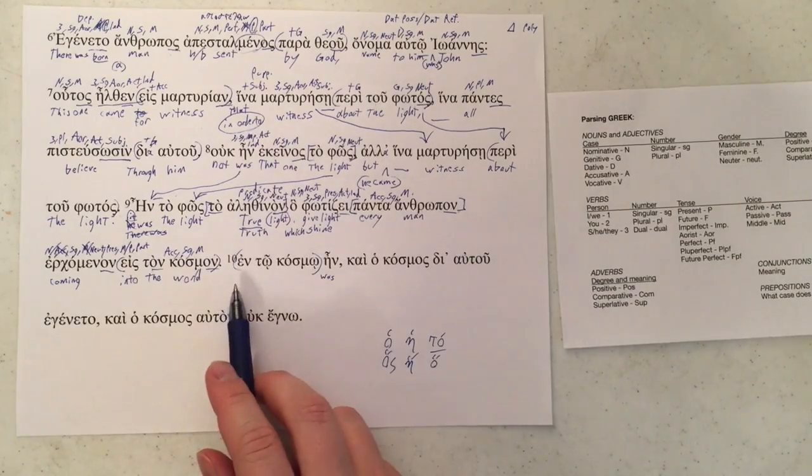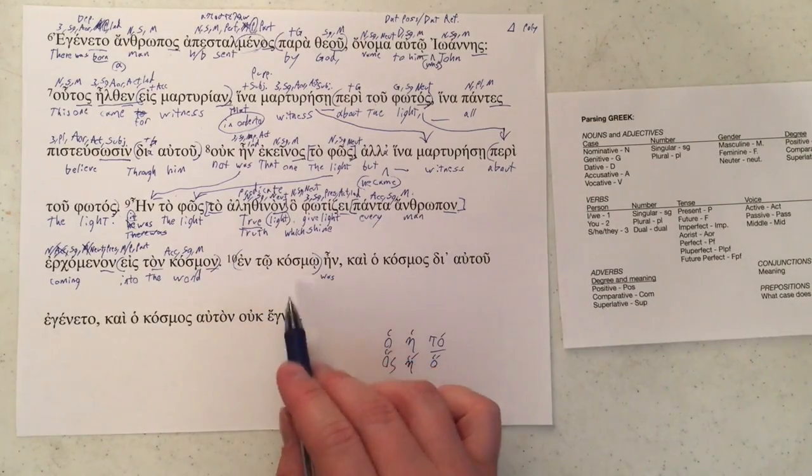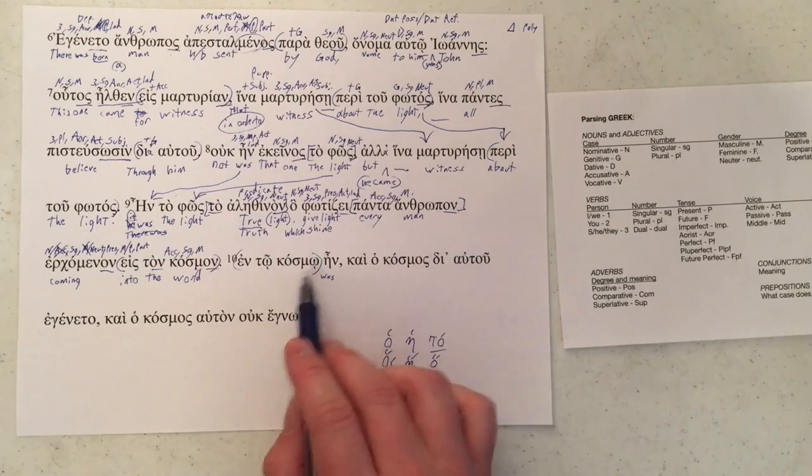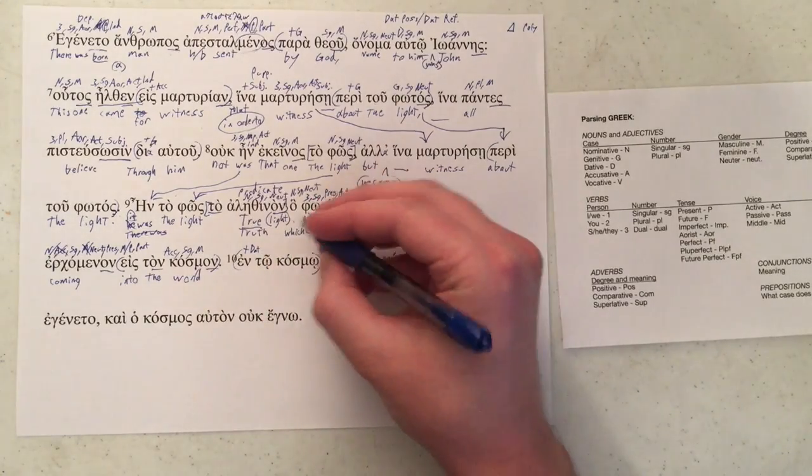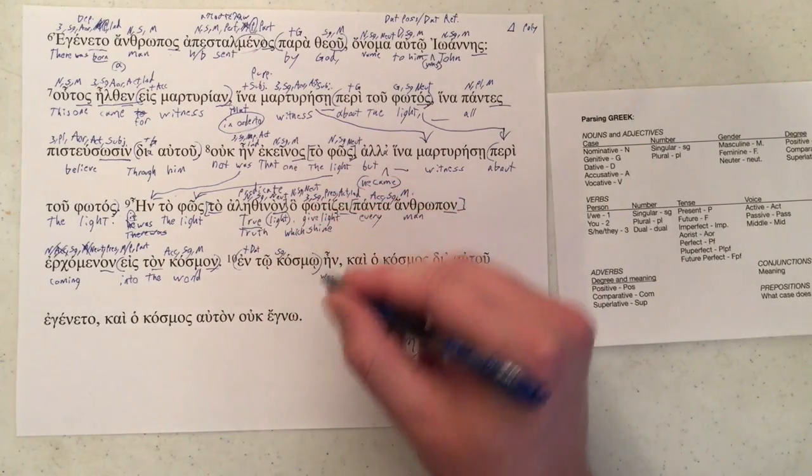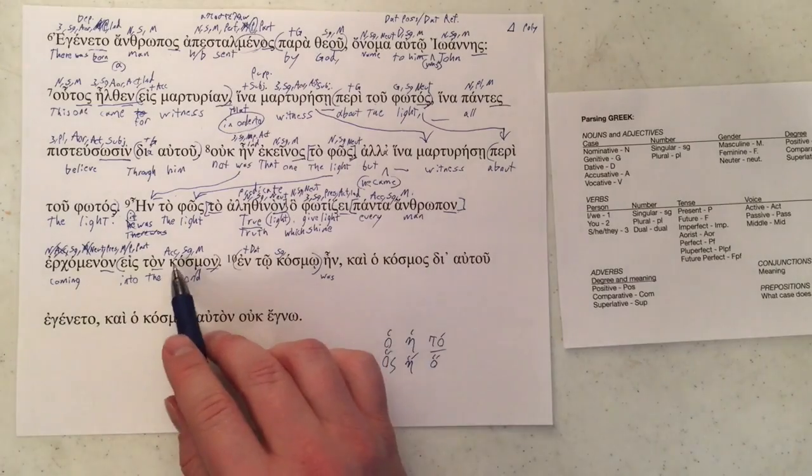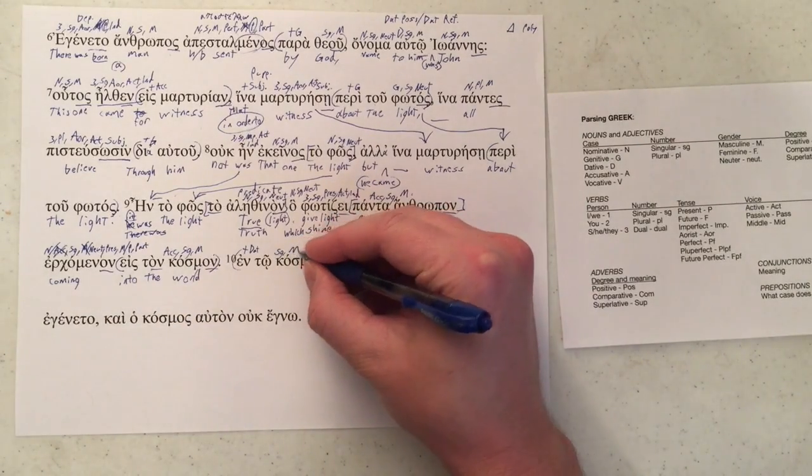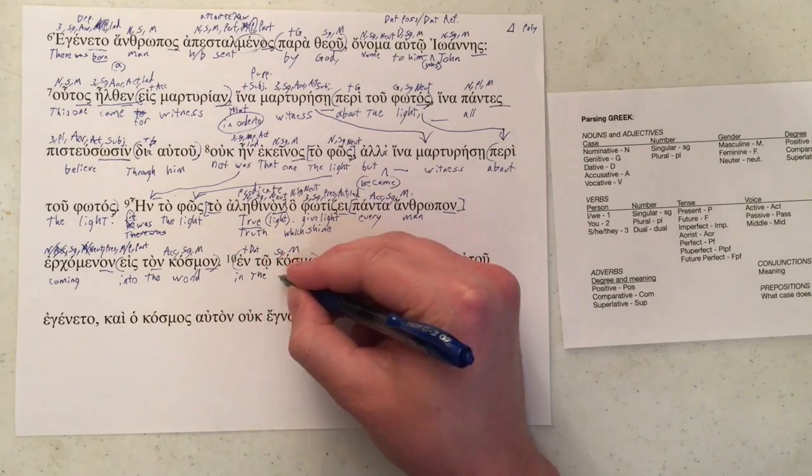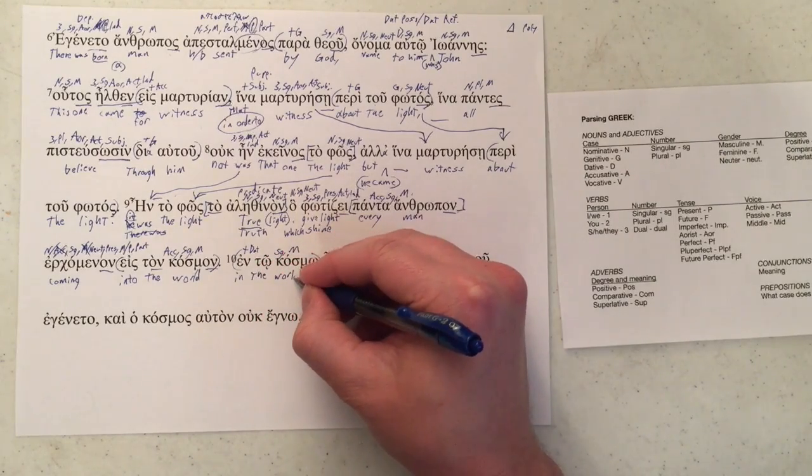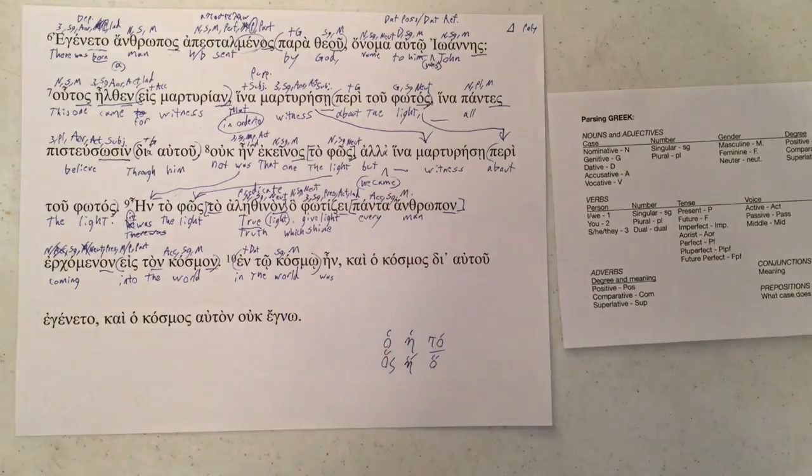Now back to our prepositional phrase, we've got en toi kosmoi, we know that these are going to be dative singular. So en here is taking the dative, and it is showing a location, this is singular, and kosmos we already know is masculine.